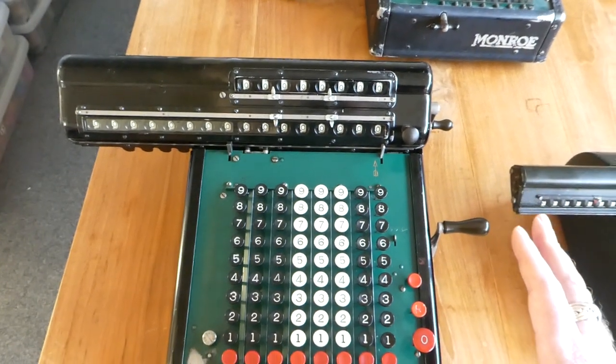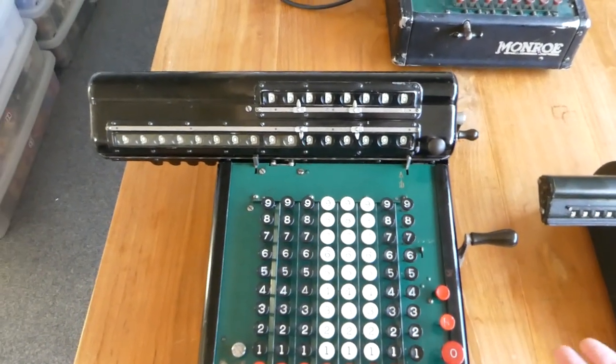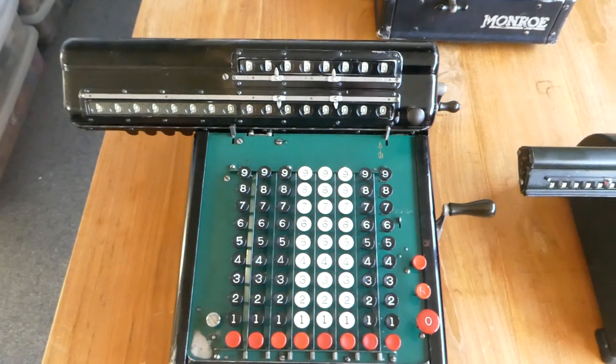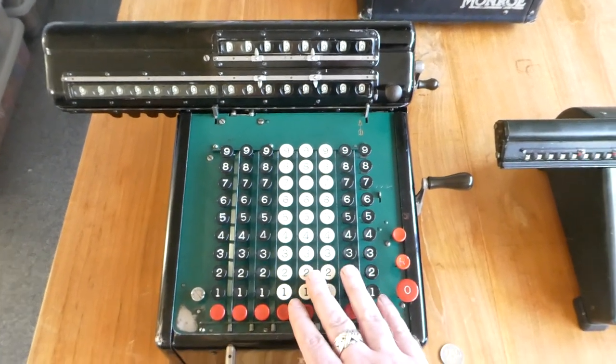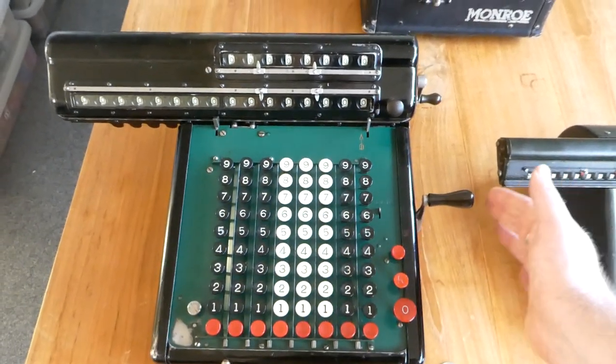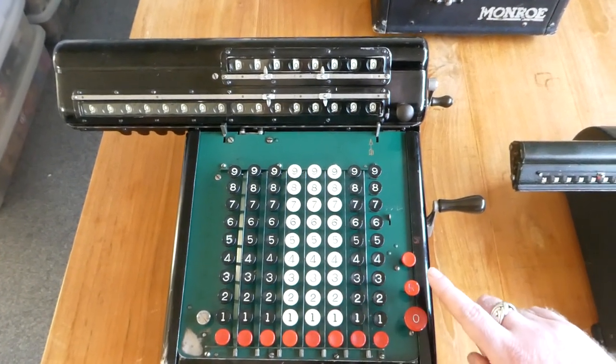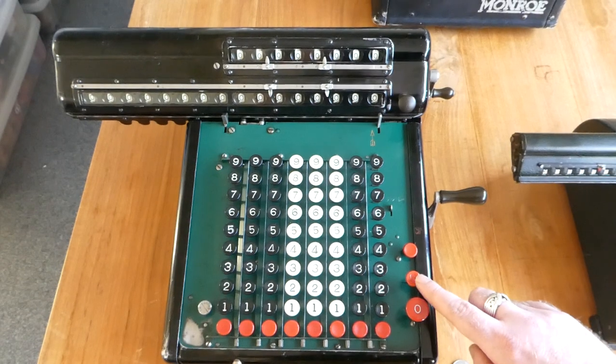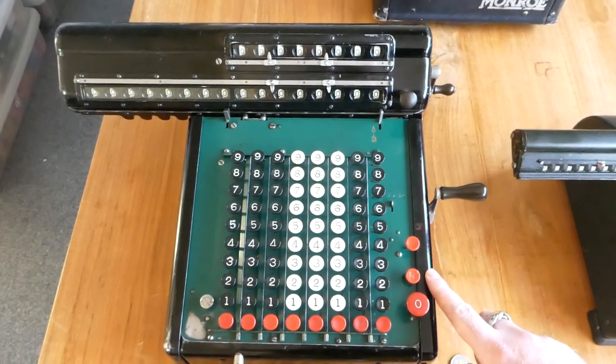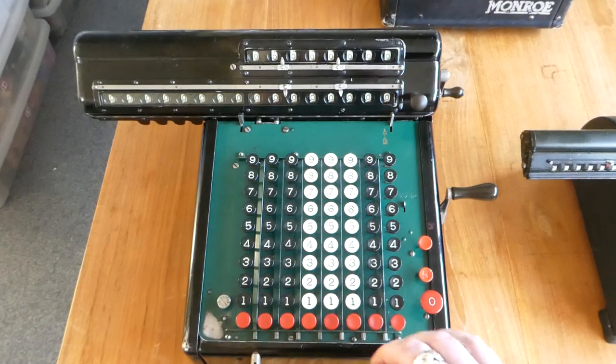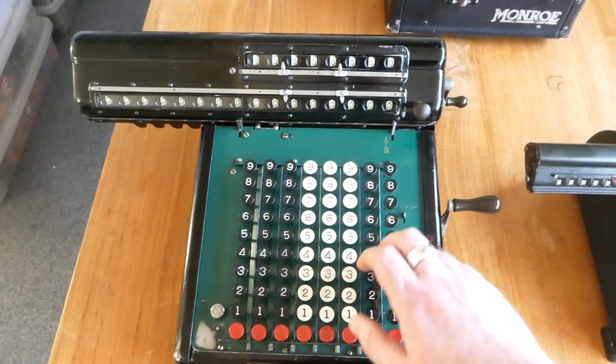Addition and subtraction is quite easy. Now for multiplication. For that you don't want the keyboard to be automatically cleared after every turn of the crank. And that's what these two buttons are for. You can press this button with R for repeat.